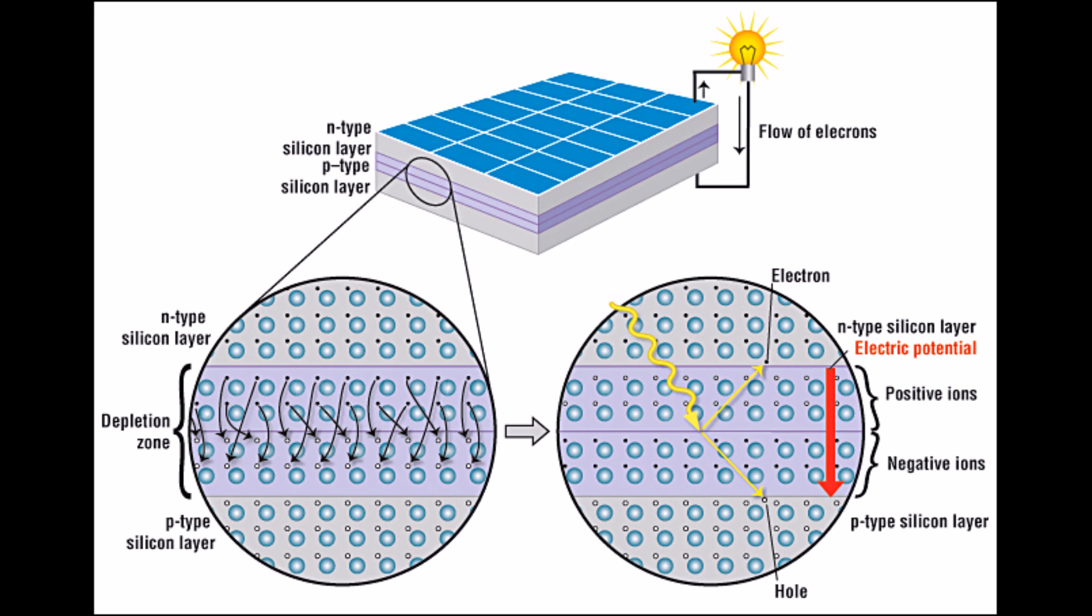To make a photovoltaic cell, a manufacturer adds phosphorus to the top layer in the sandwich, which creates a negative charge, and boron to the bottom wafer, which creates a positive charge.